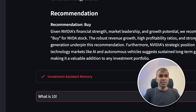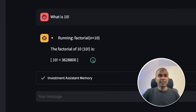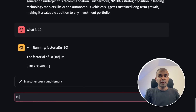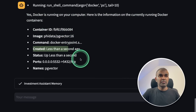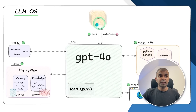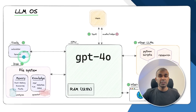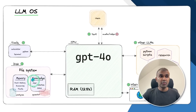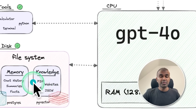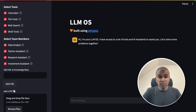Next, if I ask what is 10 factorial, it's going to run the calculator and give us the answer. Next, if I ask is Docker running on my computer, it's going to use the shell tool and get all the relevant information. In this way, when I asked all those questions to the LLM OS, we used the calculator to calculate, the terminal or shell command to check Docker, multiple AI agents to research about investment, the browsing agent for the latest news, and all the information got stored in the knowledge base when we uploaded the PDF. That's exactly what we're going to see today.